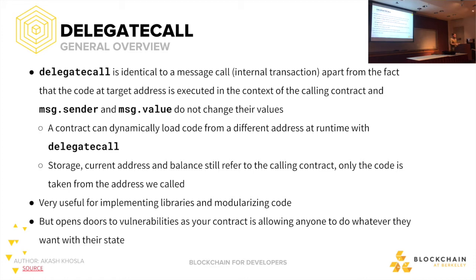In other cases it's completely fine to use delegate call within normal functions — just don't use it within fallback functions. This is very useful for implementing libraries and modularizing your code. If you're writing a very complicated multi-signature wallet, you probably want to split up your components and start making calls to other contracts, taking the scope of one contract and transferring it to a function call within another — kind of like using a library.